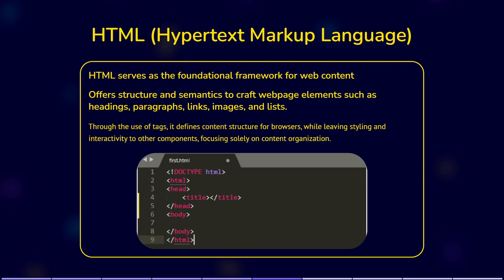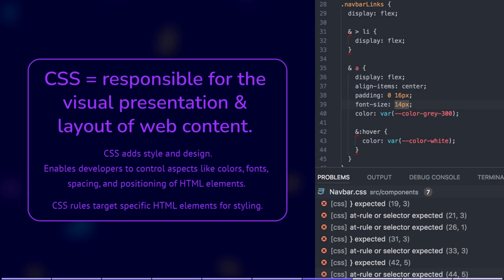CSS, or Cascading Stylesheets, is responsible for the visual presentation and layout of web content. While HTML defines the structure, CSS adds style and design. It enables developers to control aspects like colors, fonts, spacing, and positioning of HTML elements. By using CSS, you can create responsive designs that adapt to various screen sizes and devices. CSS rules are applied through selectors, which target specific HTML elements for styling.